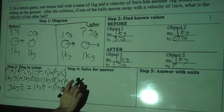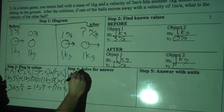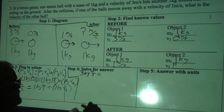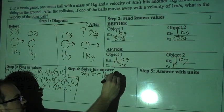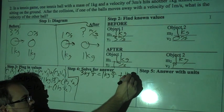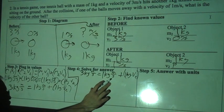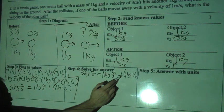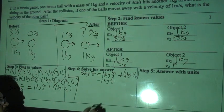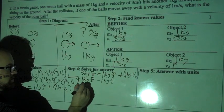So rewriting: three kilogram meters per second equals one kilogram meter per second plus one kilogram times V2. The units are the same, so I subtract one kilogram meter per second from both sides to isolate the V2 term. Three minus one gives me two kilogram meters per second on the left. The one kilogram meter per second terms cancel on the right, leaving just one kilogram times V2.